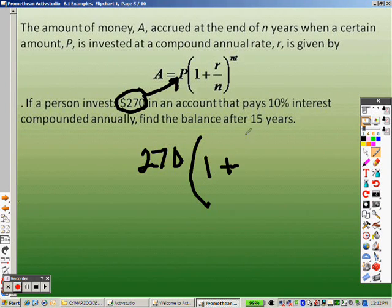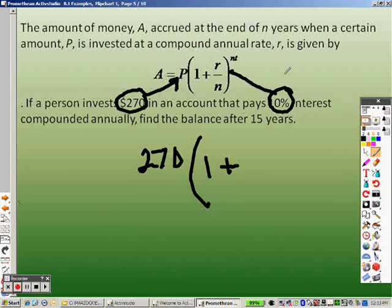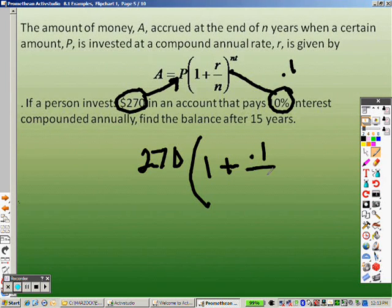1 plus R stands for rate, so that needs to go in there, and since it's 10%, you plug in 0.1. Over, compounded annually. Annually means that's how many times a year. That's your n. So annually goes in for n, so that's 1.